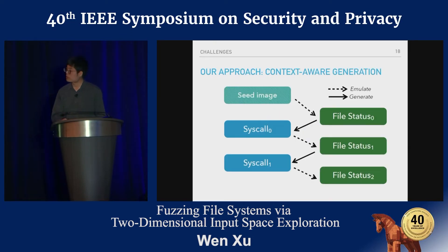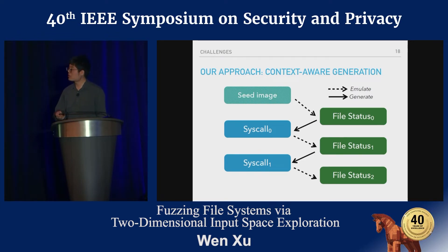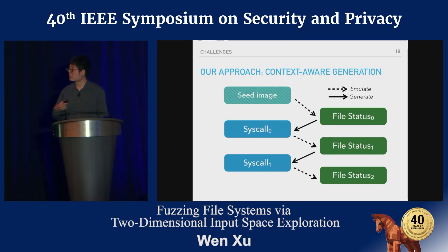That's why we propose context-aware syscall generation. Besides generating system calls, we also maintain the assumed status of the file system image during fuzzing at runtime. We speculate the status of every file object after each generated system call executes. Given a seed image, we have an initial file status, use that status to generate the first system call, then update the status as calls execute. By doing this in an iterative way, we generate context-aware system calls to achieve higher coverage and find more bugs.